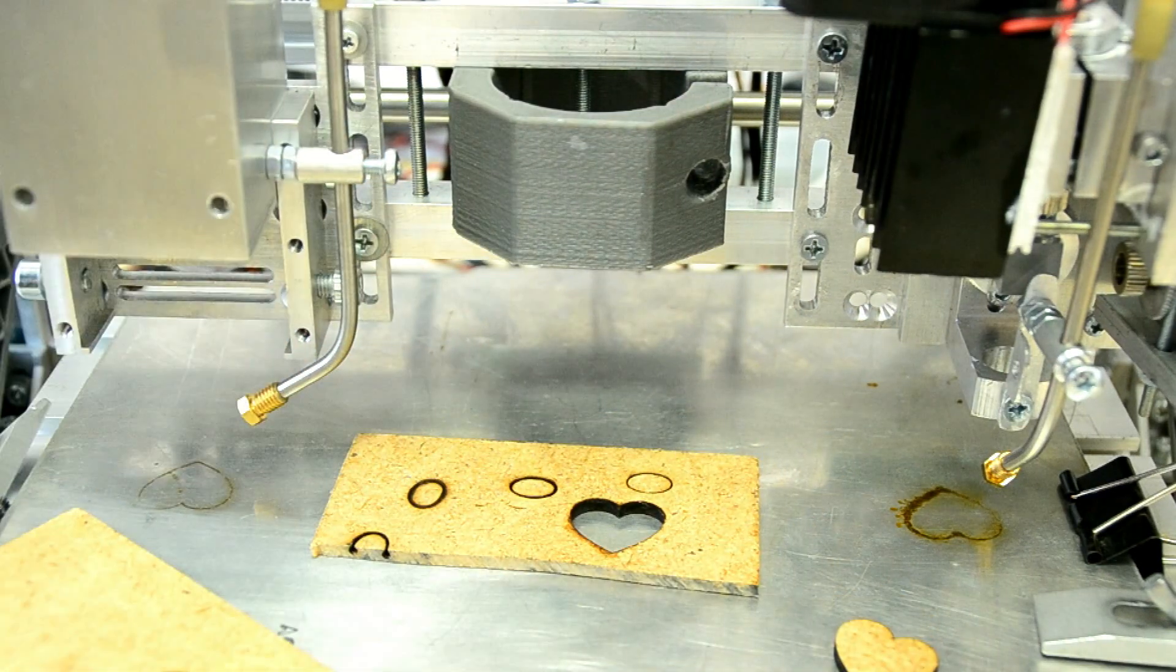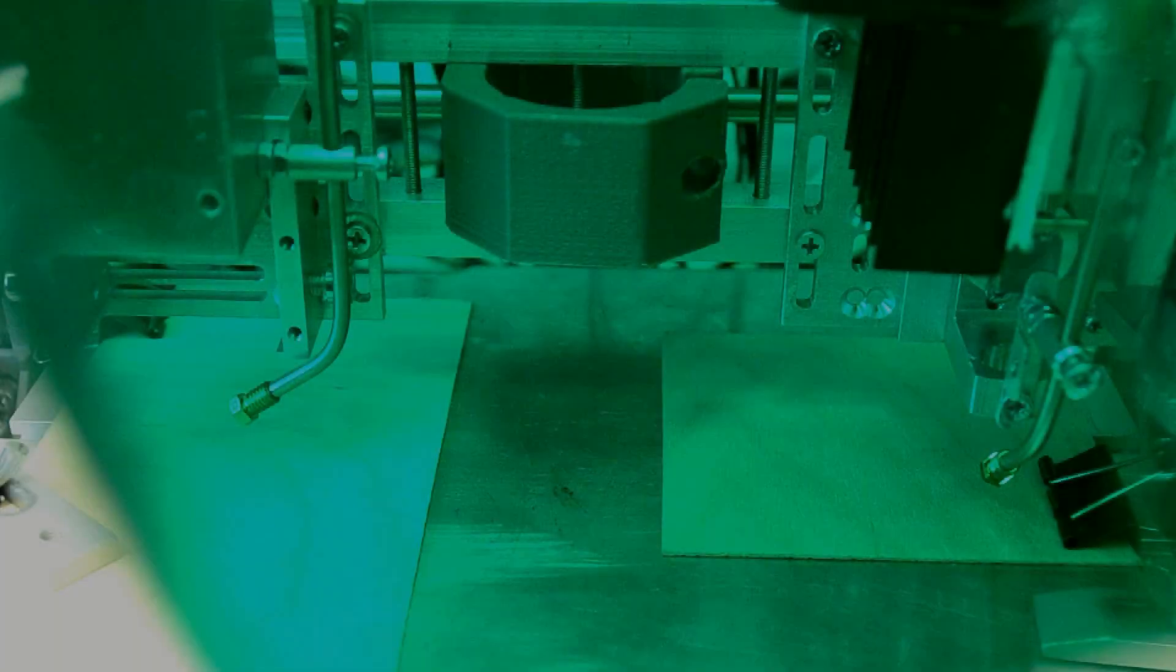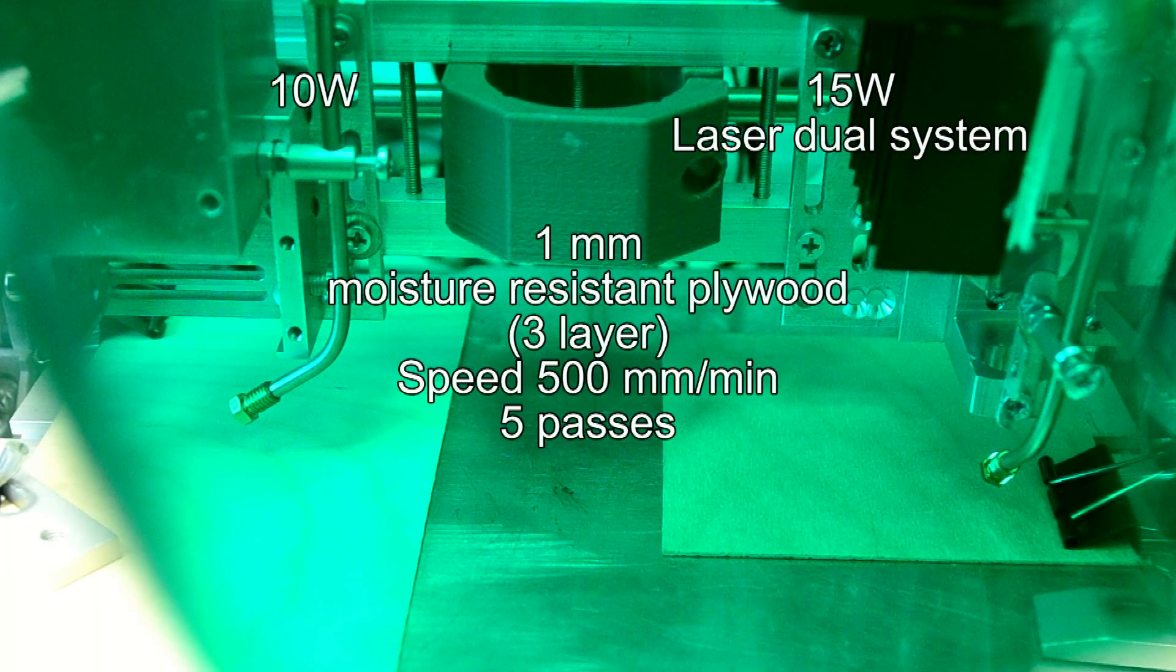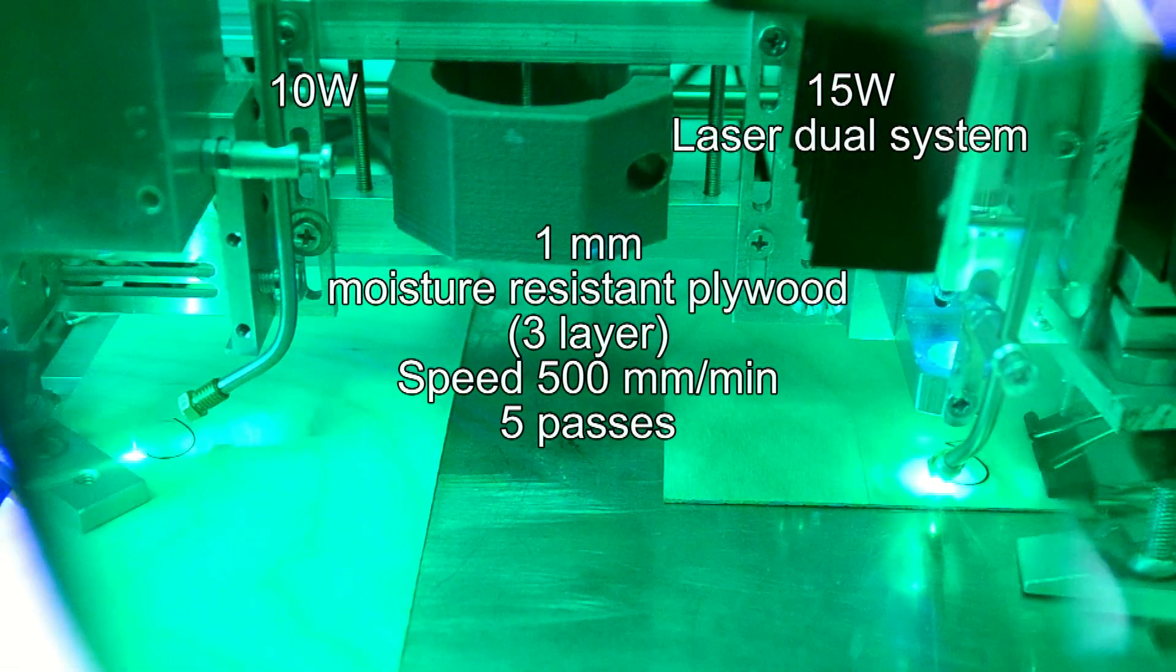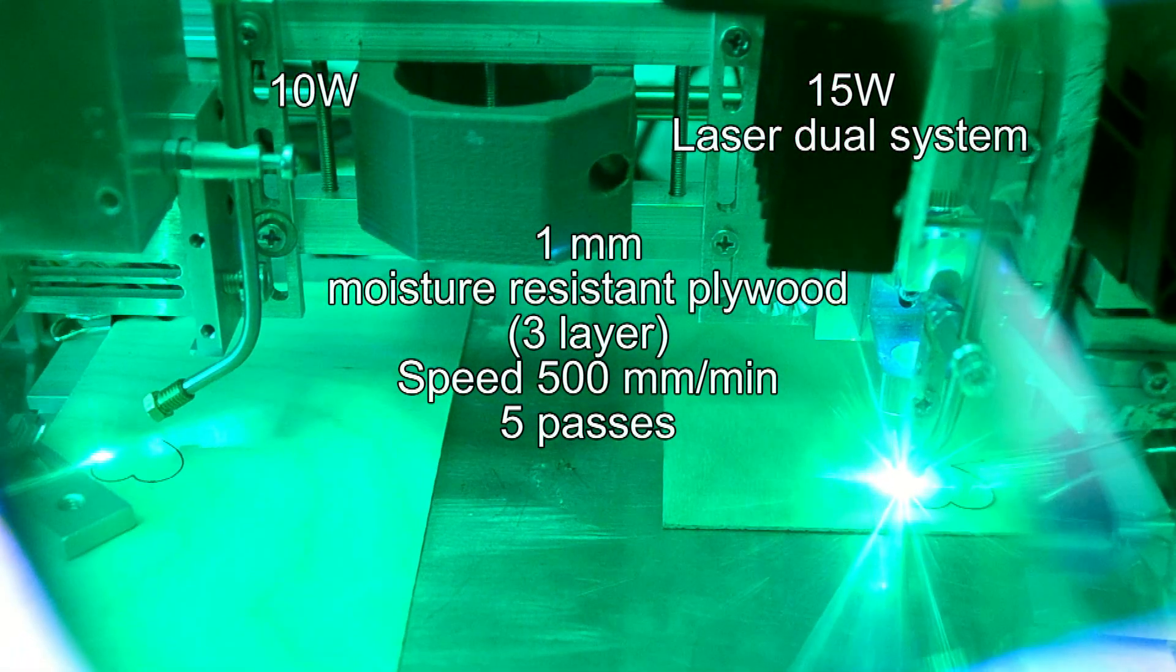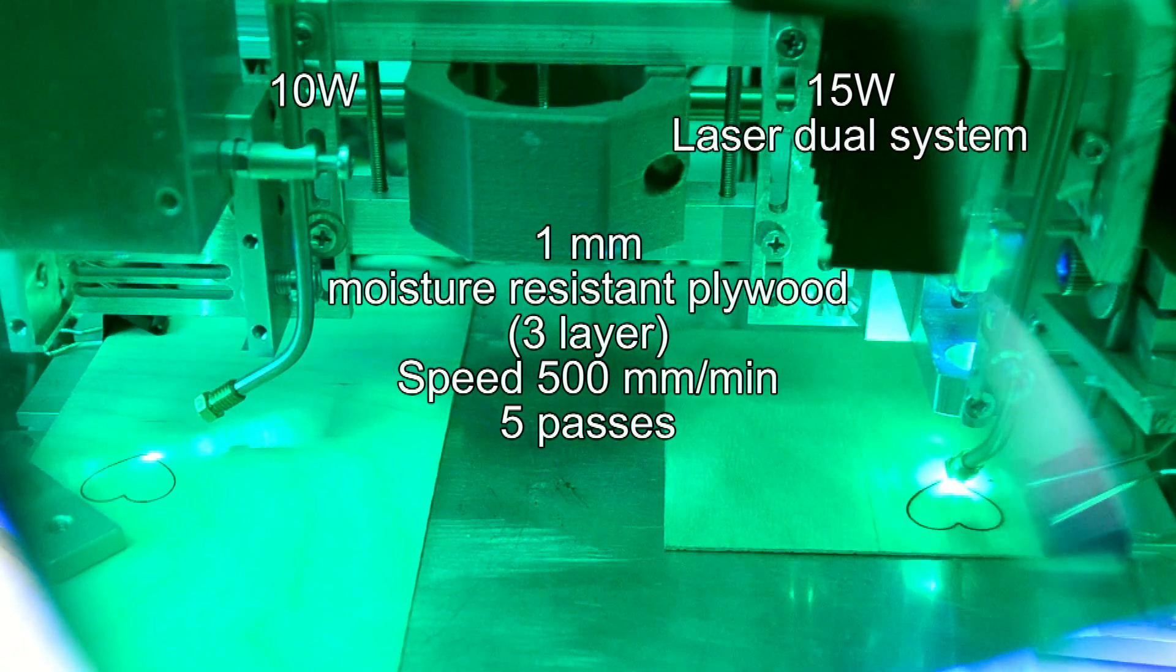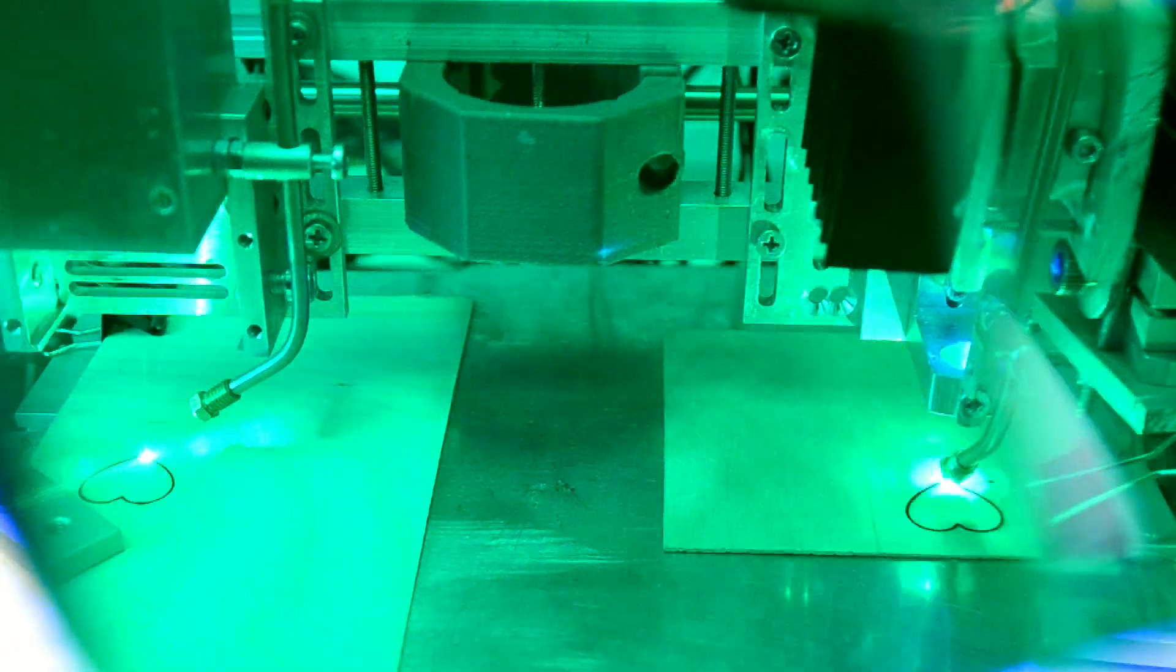Now we are going to cut very firm 1mm plywood. This plywood is mainly used for very tiny RC models. We use the same speed and also 10 repeats.